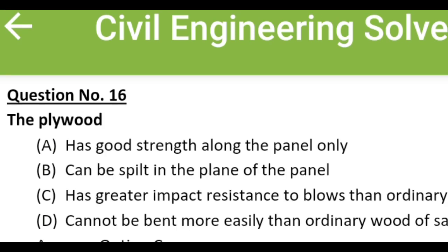Plywood: Option A: has good strength along the panel only, Option B: can be split in the plane of the panel, Option C: has greater impact resistance to blows than ordinary wood, Option D: cannot be bent more easily than ordinary wood of same thickness. The correct answer is Option C: has greater impact resistance to blows than ordinary wood.